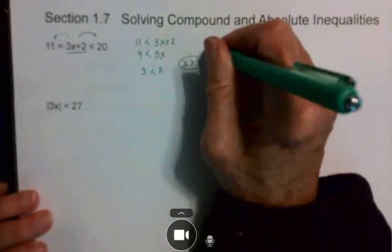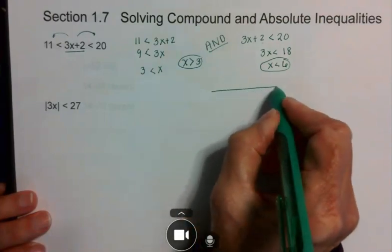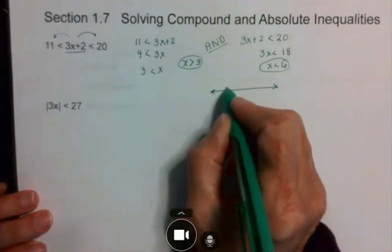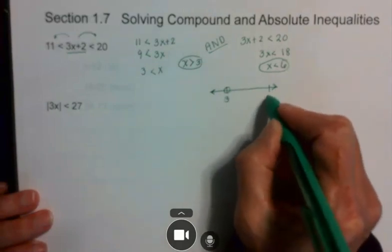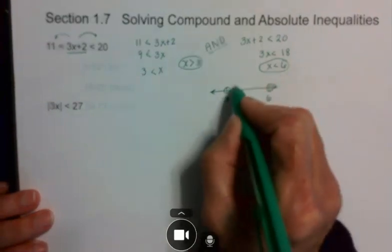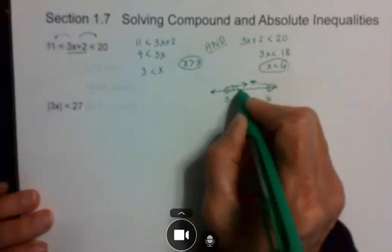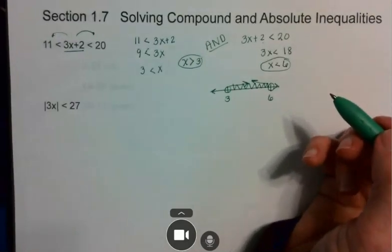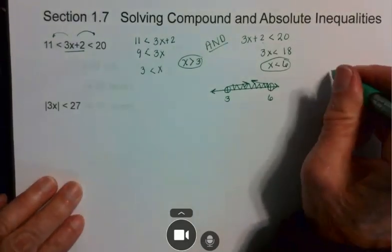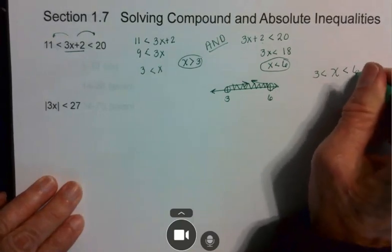Now remember, this is an AND statement. So I'm looking for the section that these two have in common. I have a 3 here, open circle. I have a 6 here, open circle. This one goes this way, this one goes this way. So this section right here in the center is what they have in common. If I was going to write that out, I would say x is greater than 3 and x is less than 6.